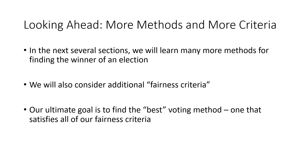Looking ahead, in the next several sections we'll look at many more methods for finding the winner of an election. So far we've only looked at plurality and the Condorcet method, but there's a lot more to explore. We'll also consider additional fairness criteria — the Condorcet Winner Criterion is our first way of measuring how good or fair an election method is. Our ultimate goal is to find the best voting method, one that satisfies all of our fairness criteria and gives us the best answer for who the winner should be.